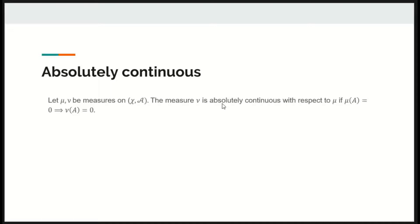For absolute continuity, let mu and nu be measures on measurable space chi, A. The measure nu is absolutely continuous with respect to mu if mu of A equals 0 implies nu of A is also 0, which is also equivalent to saying nu is dominated by mu.